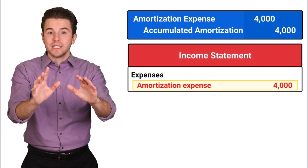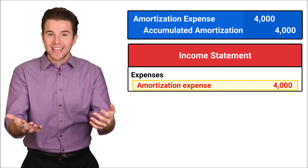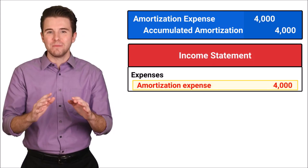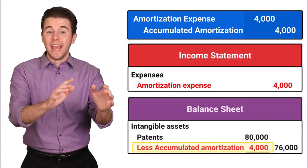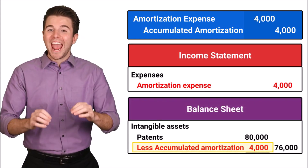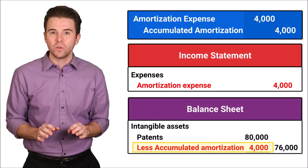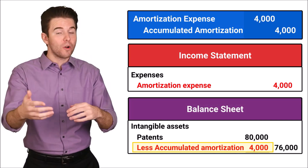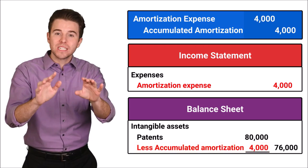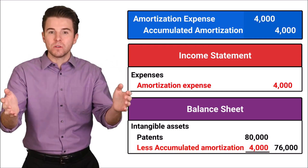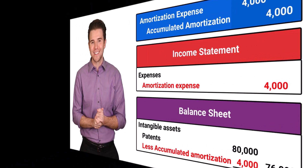Amortization expense is reported as an expense on the income statement. Accumulated amortization is a contra-asset account and is reported on the balance sheet, meaning it reduces the net amount reported for patents.